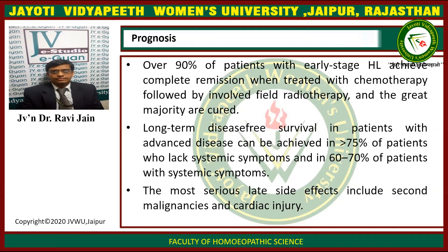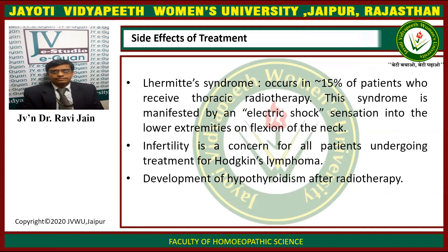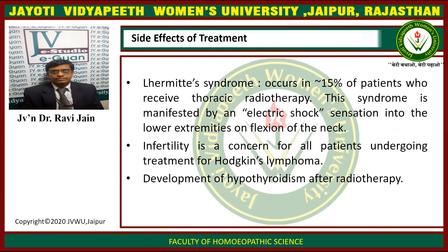Regarding prognosis: over 90% of patients with early-stage Hodgkin's lymphoma achieve complete remission when treated with chemotherapy followed by involved-field radiotherapy, and the great majority are cured. Long-term disease-free survival in advanced disease can be achieved in greater than 75% of patients without systemic symptoms and in 60–70% of those with systemic symptoms. The most serious late side effects include second malignancies and cardiac disease. Lhermitte's syndrome occurs in about 15% of patients receiving thoracic radiotherapy, manifested by an electric shock sensation in the lower extremities on flexing the neck. Infertility is a concern for all patients, and hypothyroidism may develop after radiotherapy.